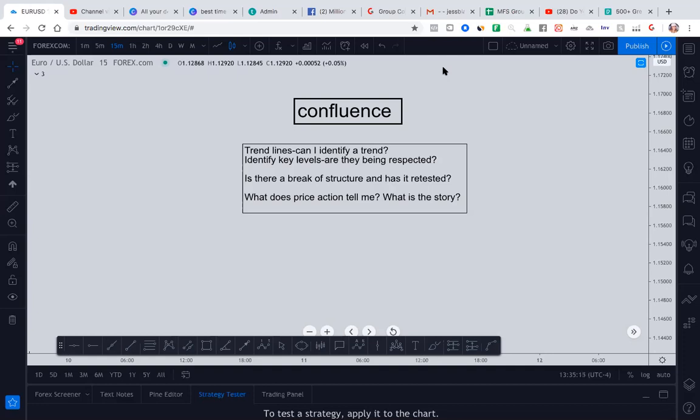So if you aren't able to identify a trend, okay, or maybe you are, what you want to do is see the respect to your key level. Is the market attracted to it? Is it showing you rejection? Is it showing you that every time it retested or breaks and retested, it moves in the direction you anticipate?